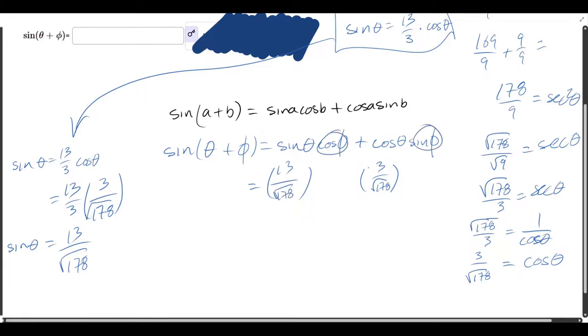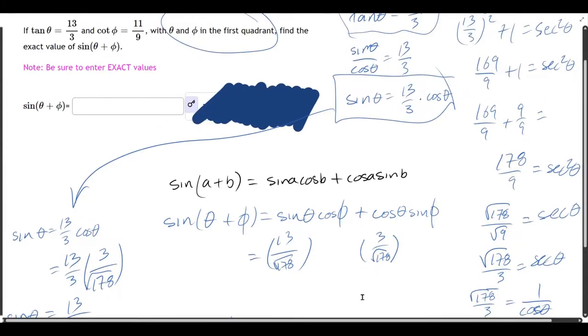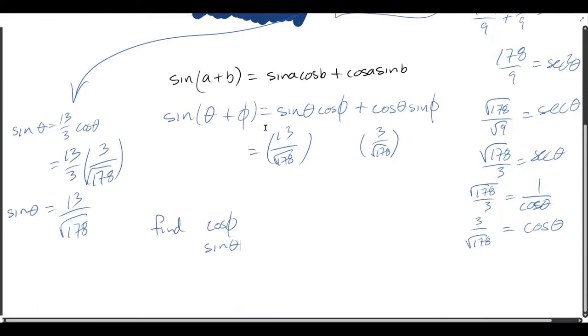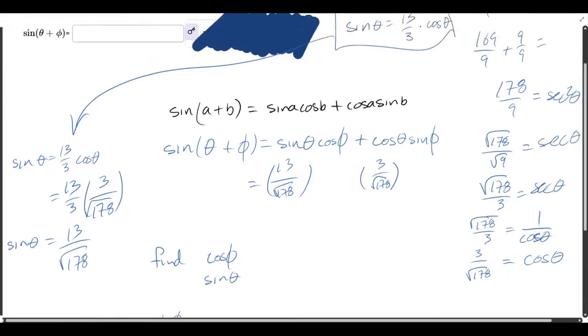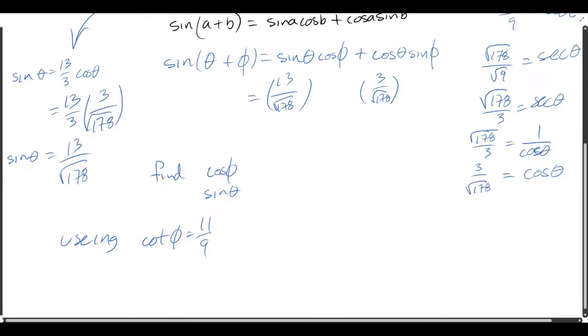You will need to get cosine of phi and sine phi. How do you do that? Let's see what information we start with. Cotangent of phi is 11 ninths. This is the reciprocal of tangent. Tangent was opposite over adjacent. So this is adjacent over opposite. Remember, we took the reciprocal. So instead of opposite over adjacent, it's adjacent over opposite.